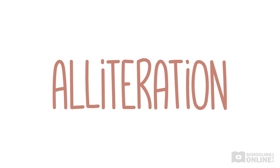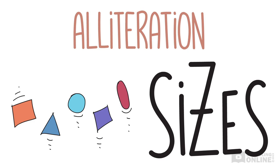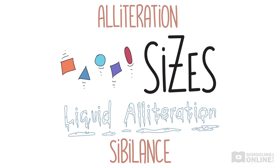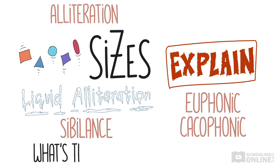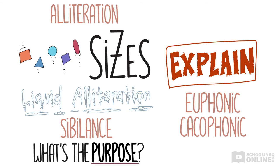In summary, alliteration comes in many shapes and sizes. Remember that certain types of alliteration, like liquid alliteration or sibilance, are more likely to create a specific effect. Always remember to explain how the repeated sound is euphonic or cacophonic and link that back to the poet's purpose in creating a pleasant or harsh sound.